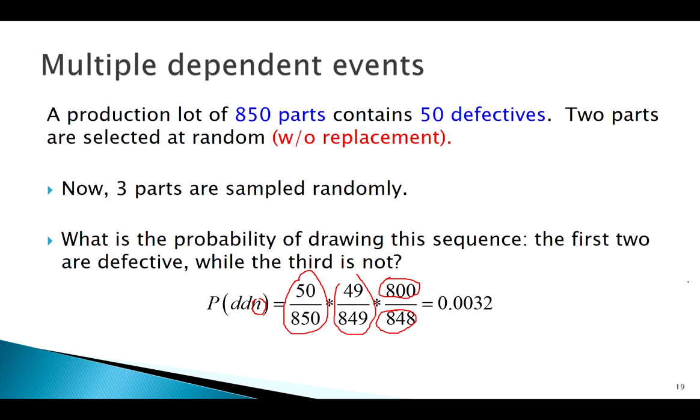Now this isn't bad for just three parts, but what if I had said what's the probability it takes me 10 parts or 100 parts to find a defective? That would be doable, but we definitely wouldn't want to do it by hand anyways.